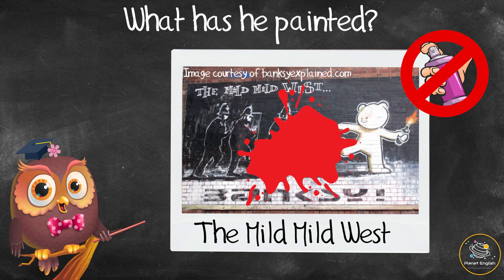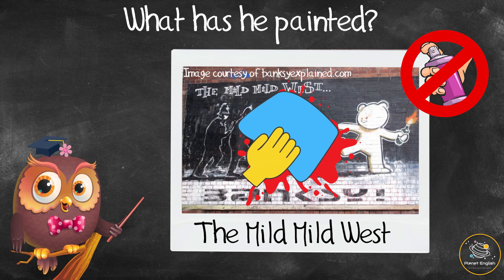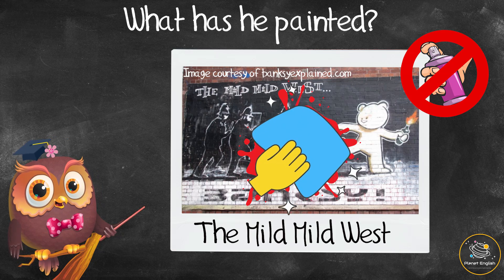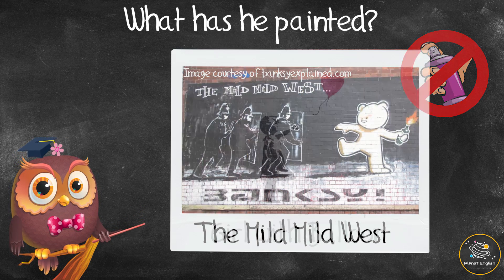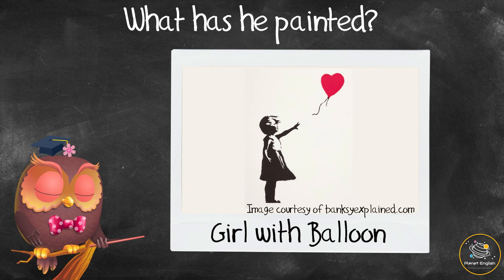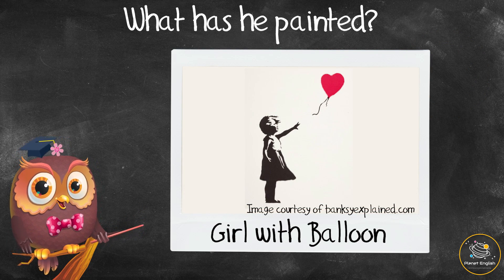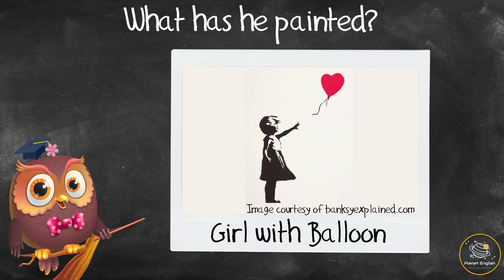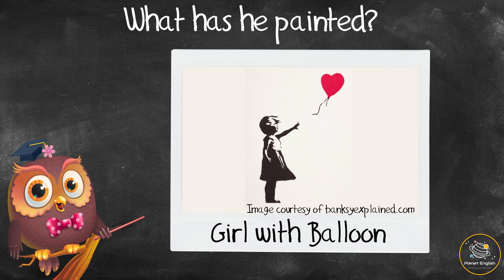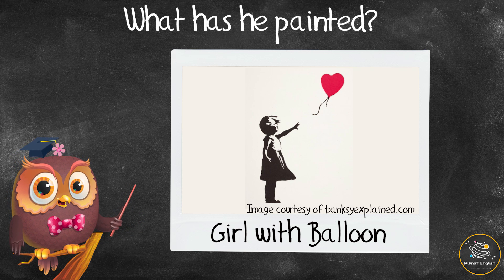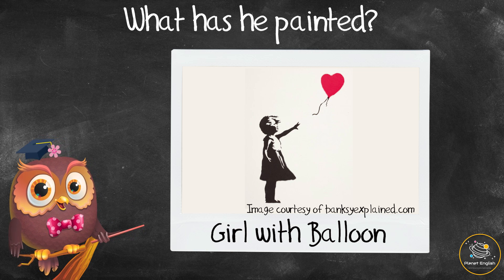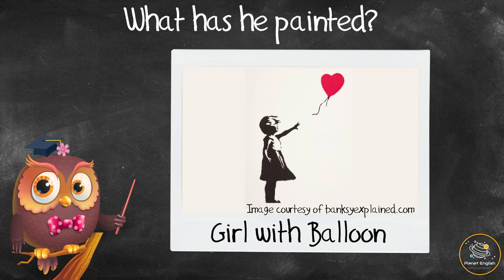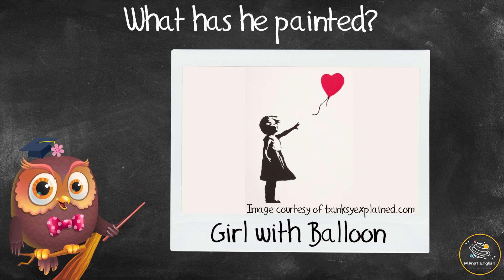Vandalism is to destroy or damage something that belongs to someone else on purpose. However, the painting is so popular that local volunteers came together to fix it. In 2002, Banksy started painting a series of stenciled artworks around London called Girl with Balloon.